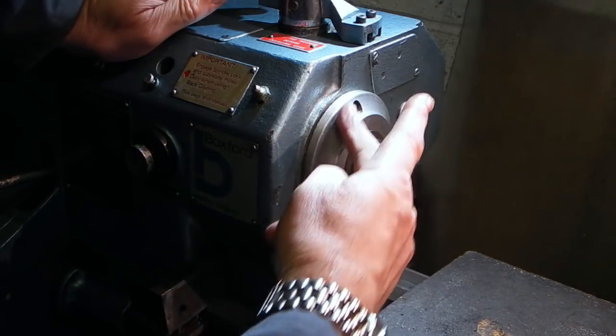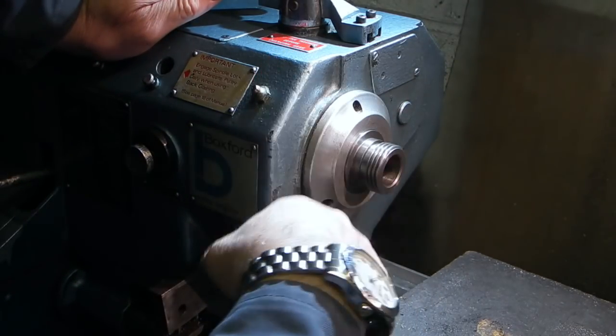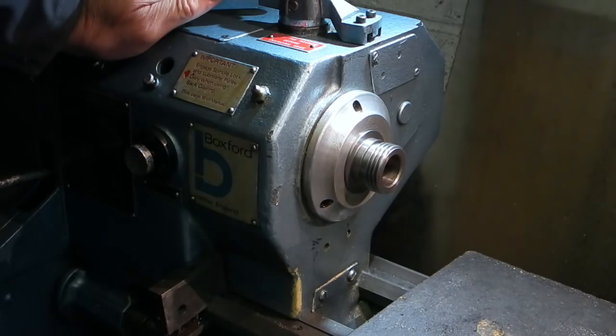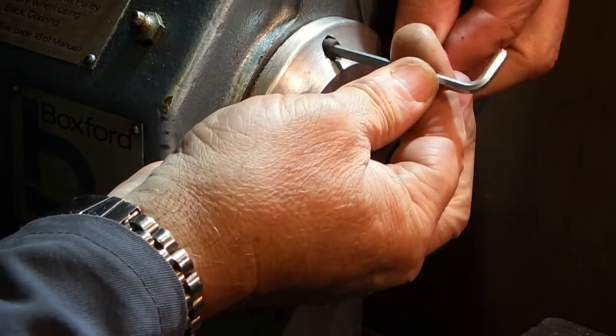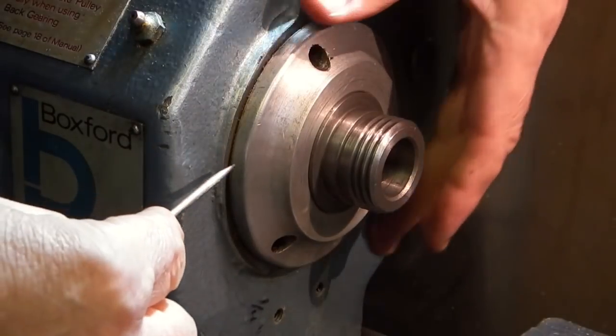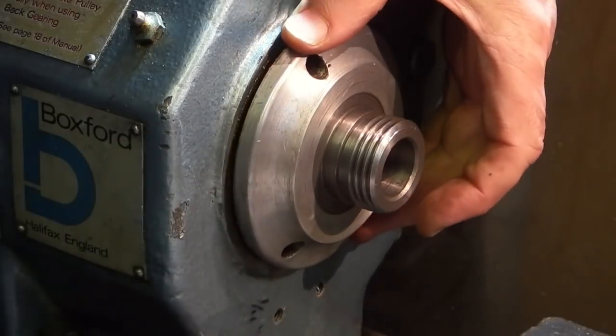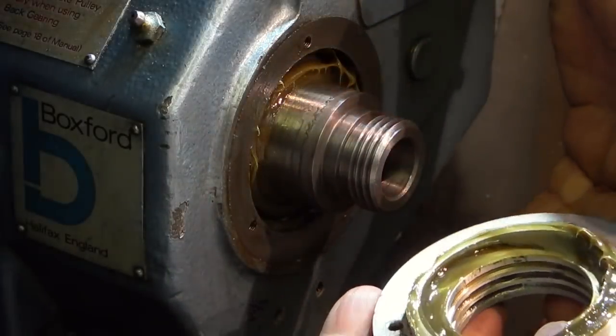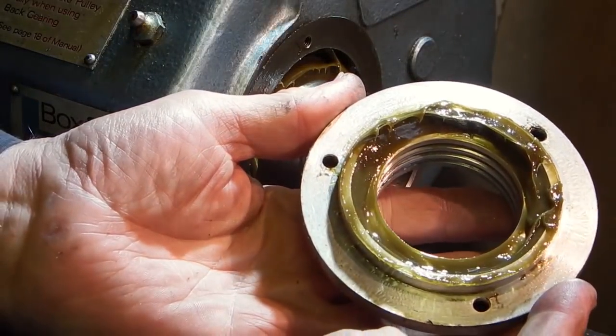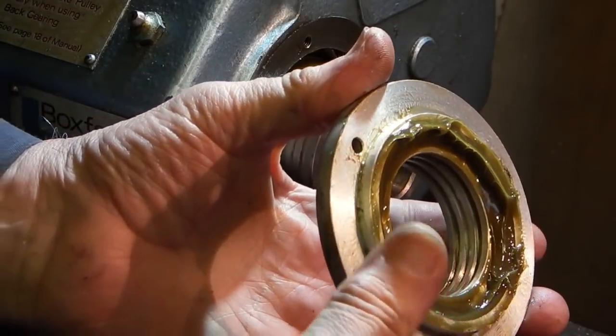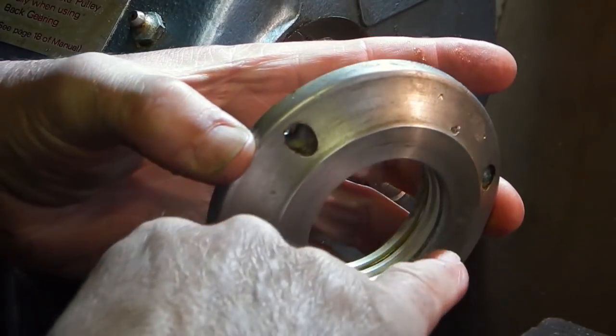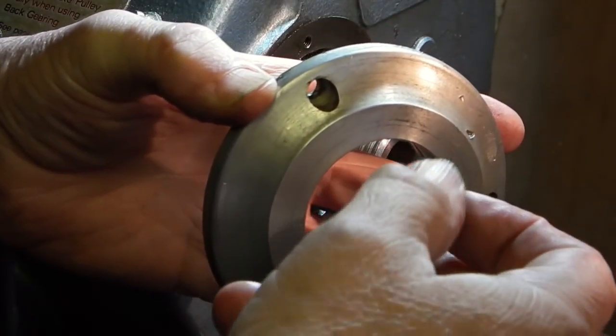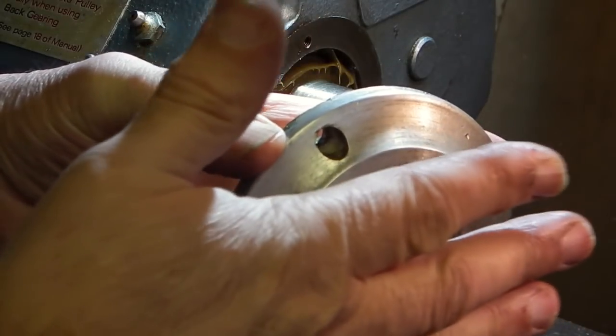So what I'll do is I'll take this cover off here just to show the bearing behind this cover. At the same time I'll clean it out. There are three cap heads that hold the cover on. You see there's no grease seal as such, well just these three grooves. The idea is if the grease gets into there it slowly moves along and the spindle keeps it in position.